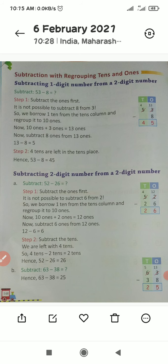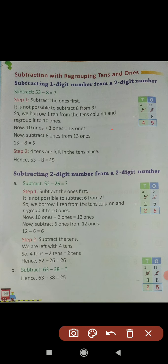53 minus 8. First of all write 53 in the correct columns — 5 in the tens column and 3 in the ones column. Now write 8 in the ones column. Subtract the ones first. In the ones place we have 3 and 8. Now can we subtract 8 from 3? No, it is not possible, because 8 is greater than 3.